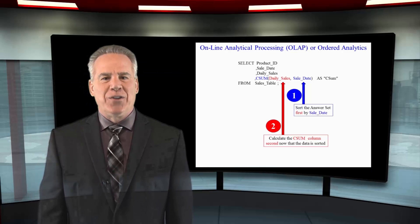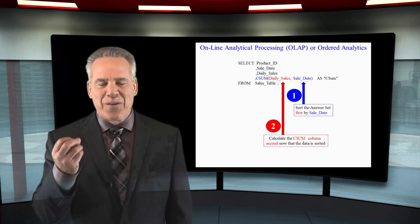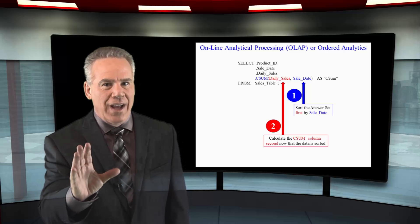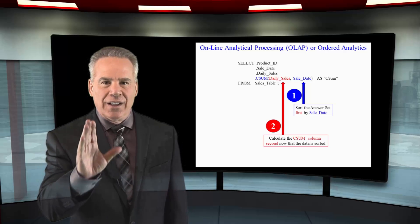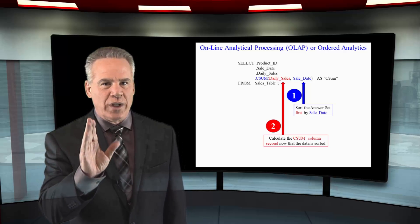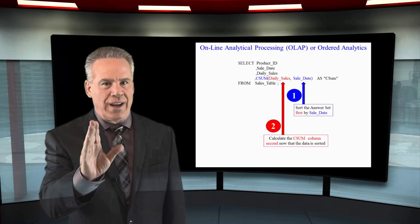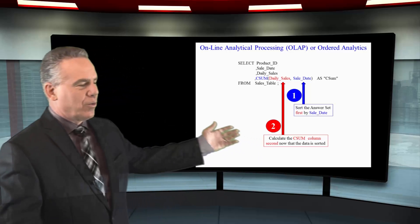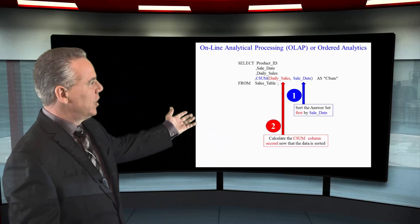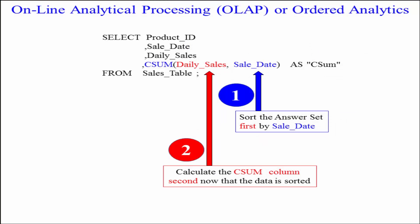At first this looks like Greek, especially the further you go, but let's come up with some real rules right now. Take a look at my screen here. I'm going to select the product ID, the sale date, and daily sales, and then I'm going to see some daily sales.